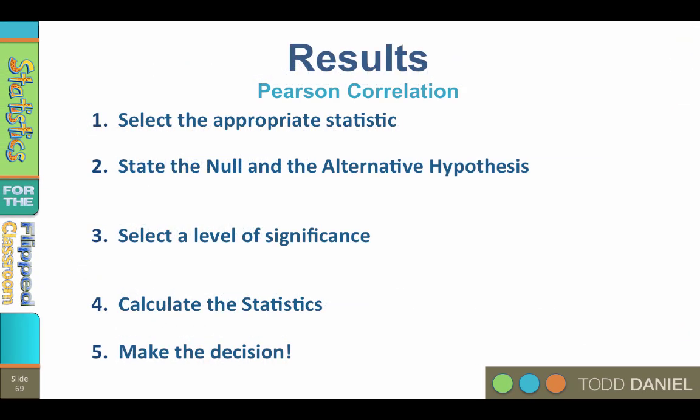We will walk through the five steps of hypothesis testing. I covered the assumptions of correlation and how to determine the null and alternative hypotheses in the previous video about doing correlation by hand. I assume that you have watched that video, so you are somewhat familiar with the degrees of freedom and rho. Step number one: select the appropriate statistic. We are measuring the strength and direction of a relationship between two variables, so we will use the Pearson correlation.